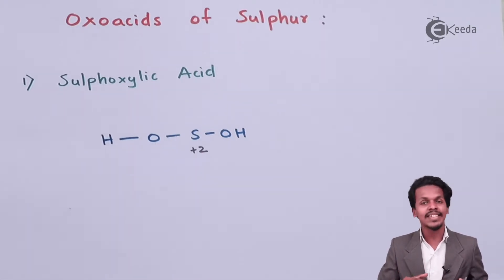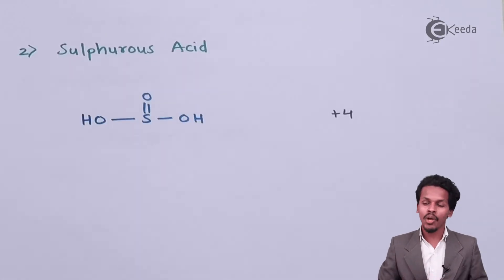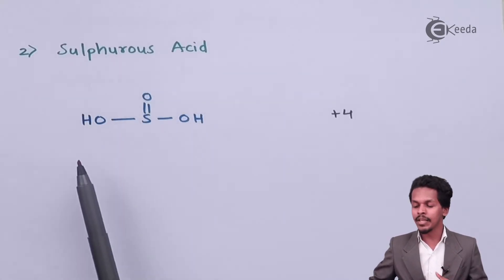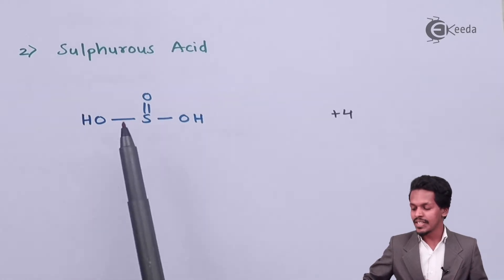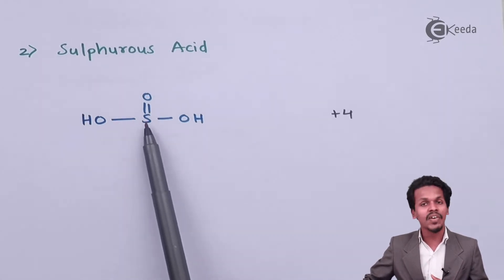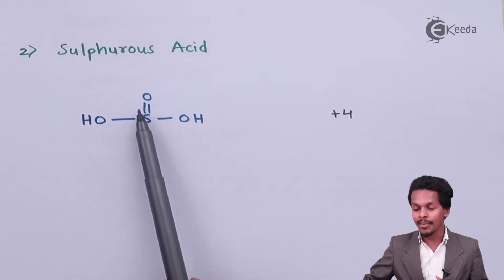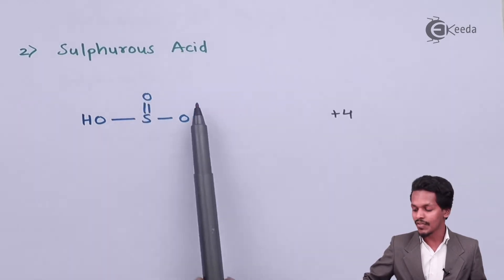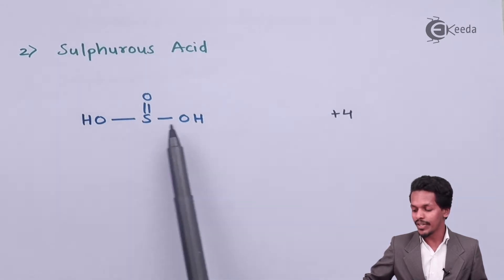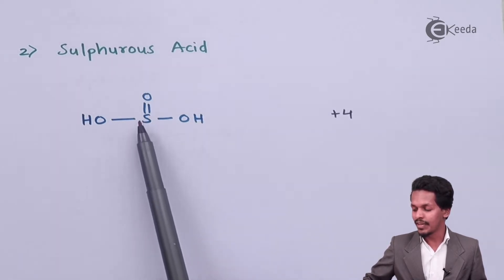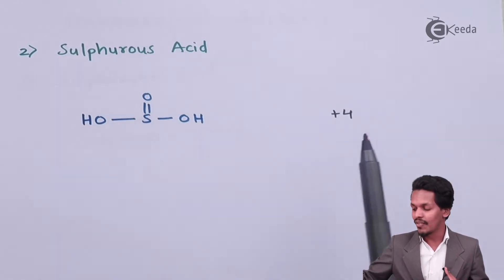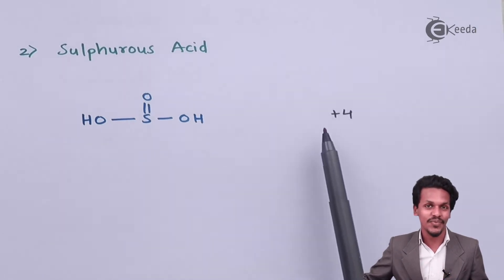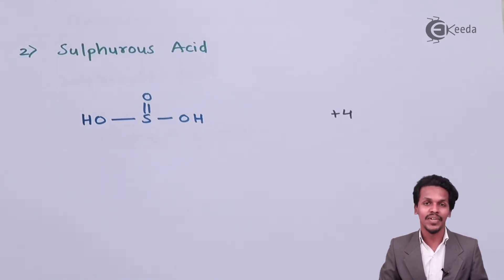Now let us move on to the next one — sulfurous acid, which is H₂SO₃. In this structure, sulfur is attached to an oxygen atom with a double bond, and the remaining two valencies of sulfur are satisfied by OH groups. The central sulfur atom has an oxidation state of plus 4.